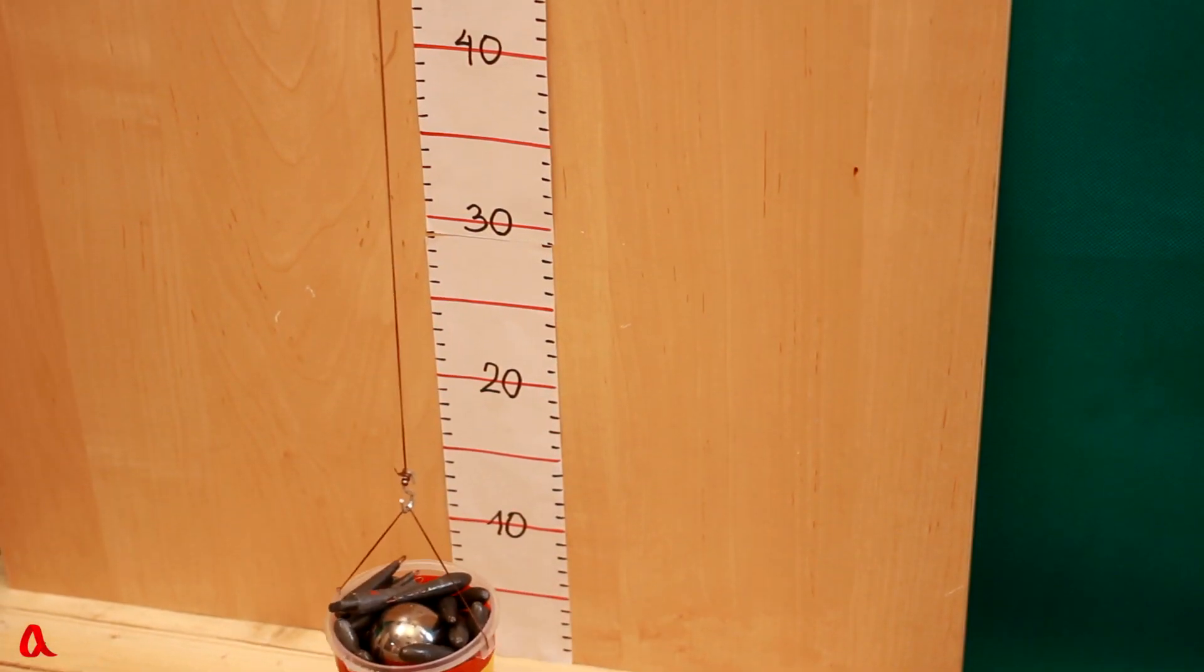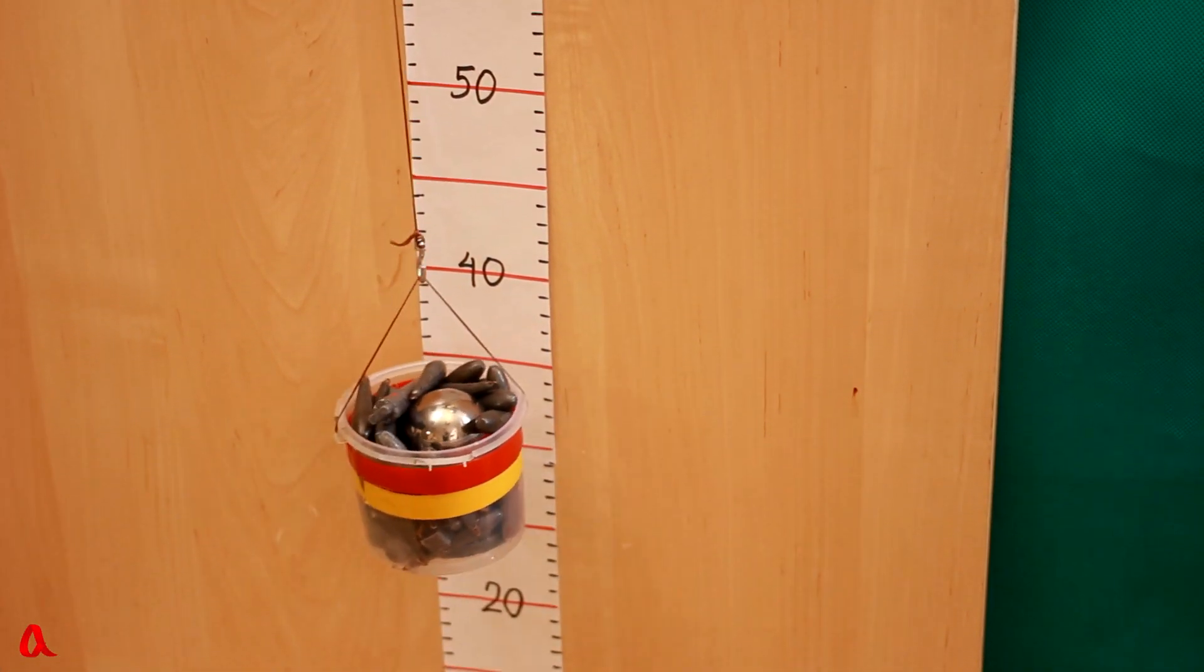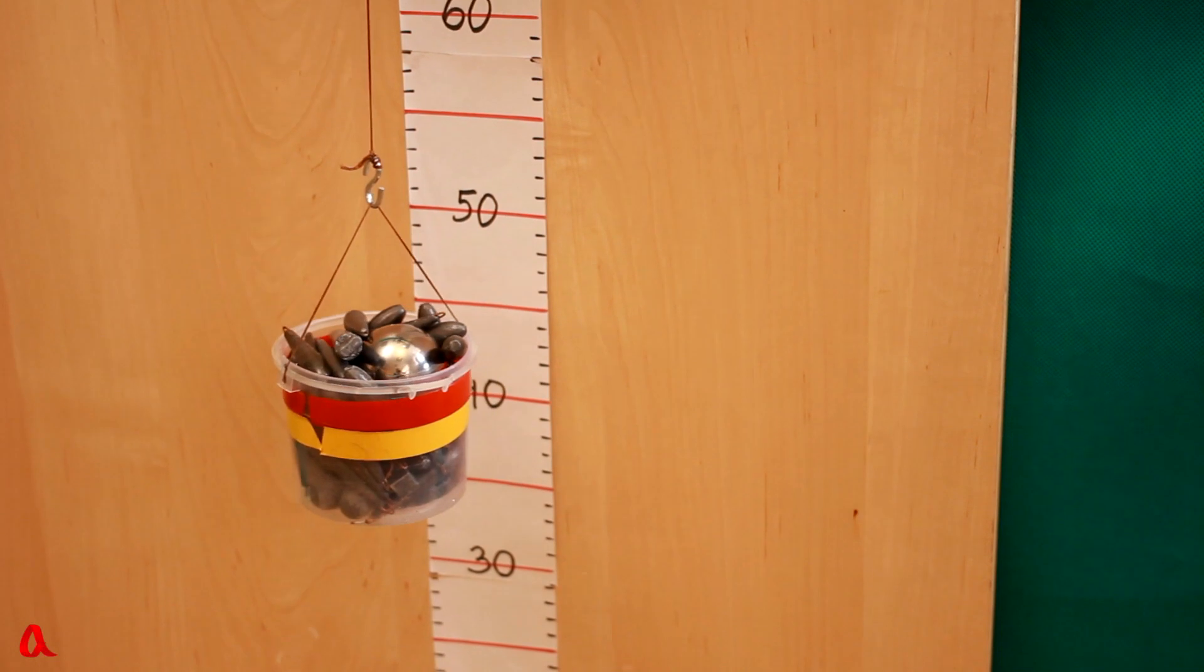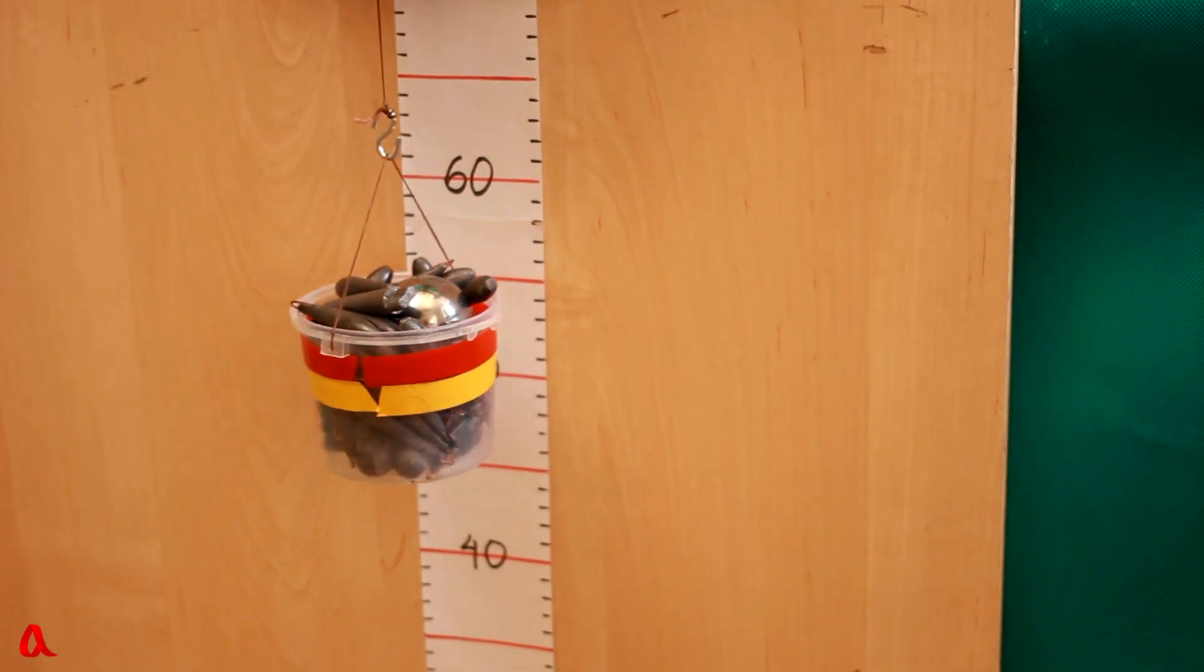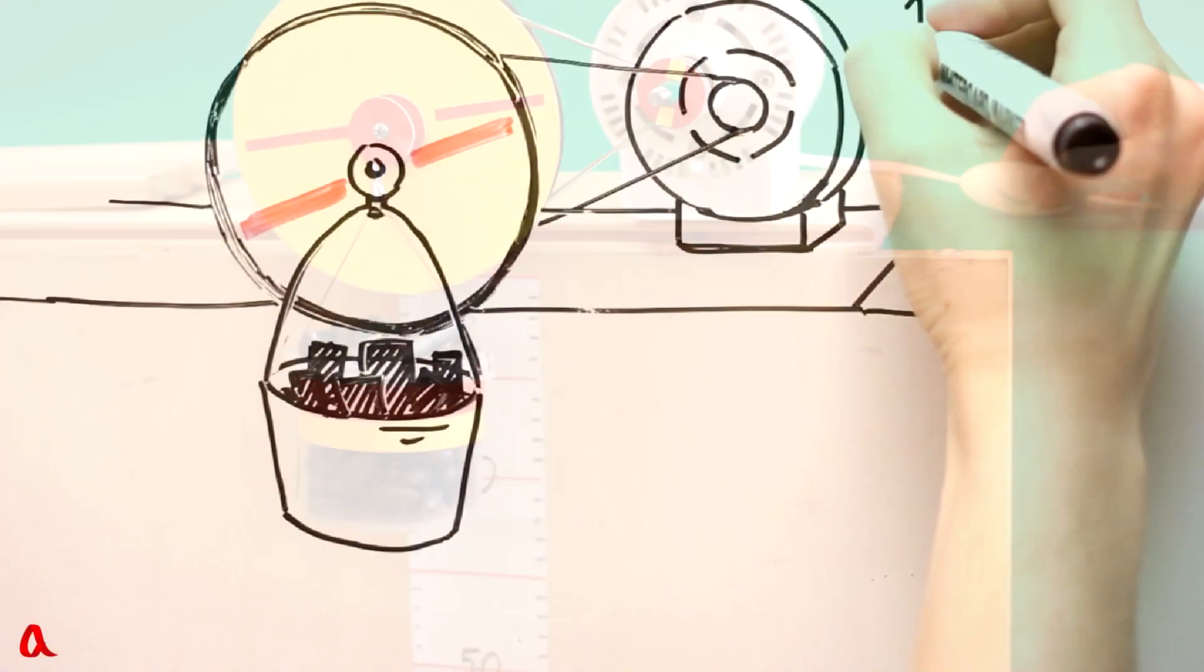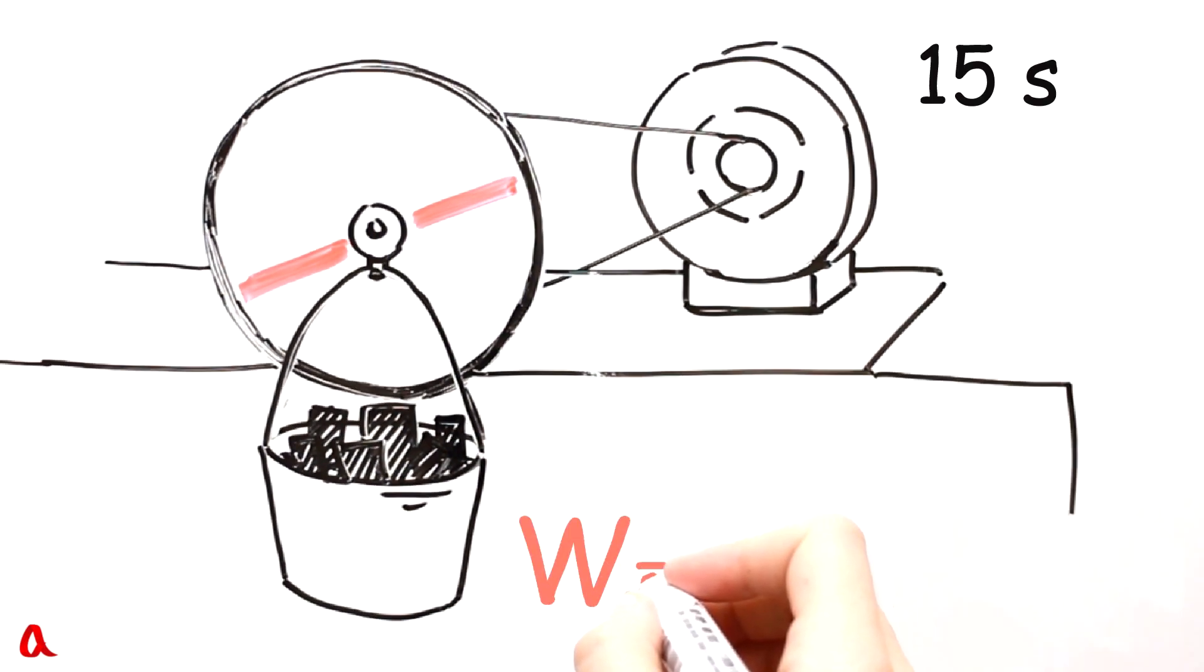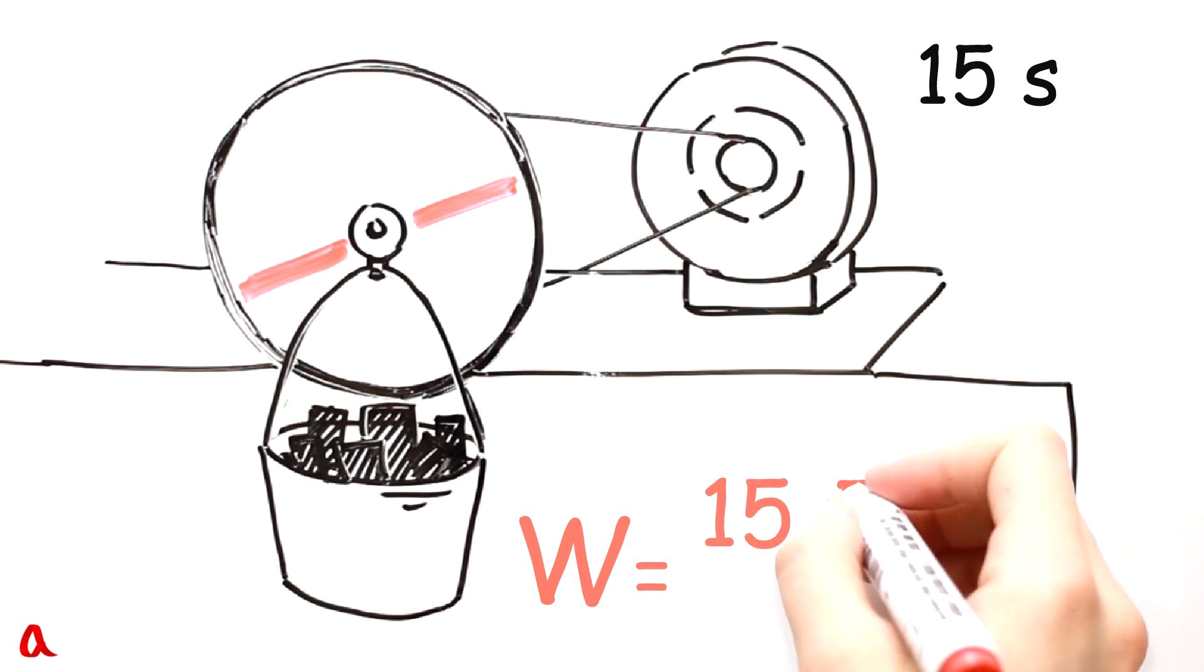We launch the engine and the load is slowly going up. Halt! The load has been lifted to the required distance in 15 seconds. To find the power we need to divide work by time, that is 15 joules divided by 15 seconds, which makes 1 joule per second or 1 watt. Is the power of 1 watt much or little?